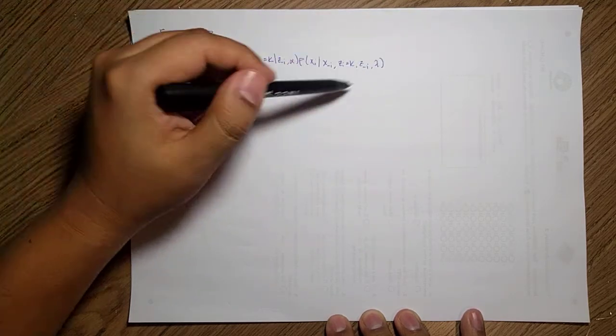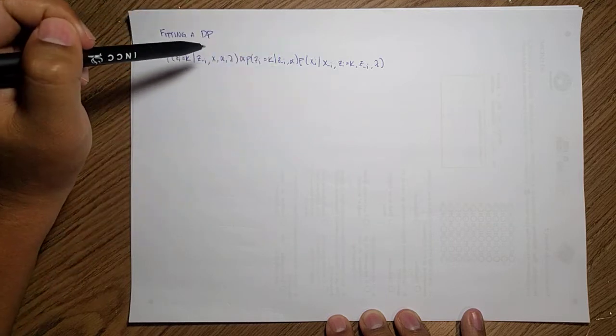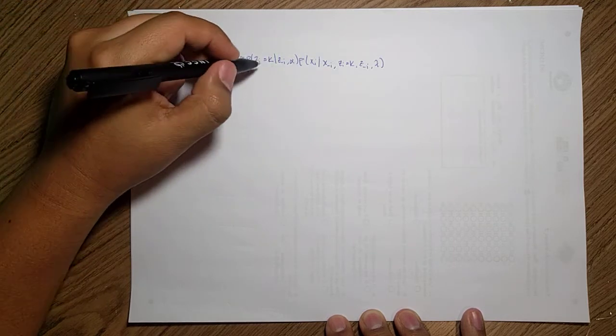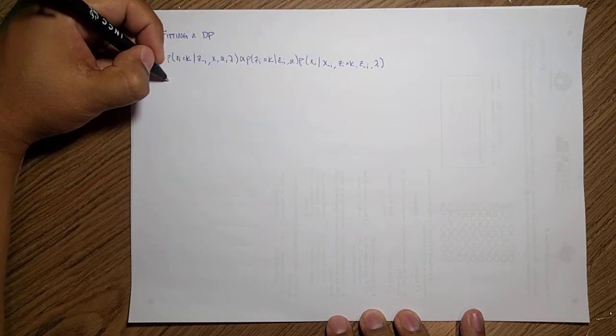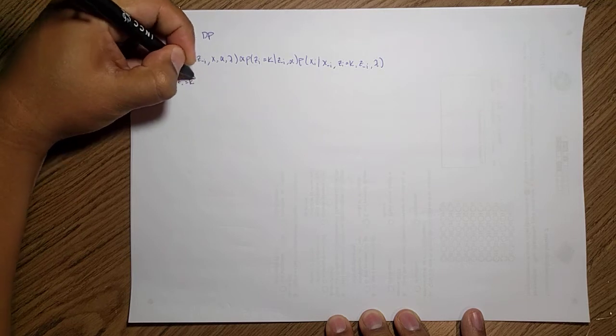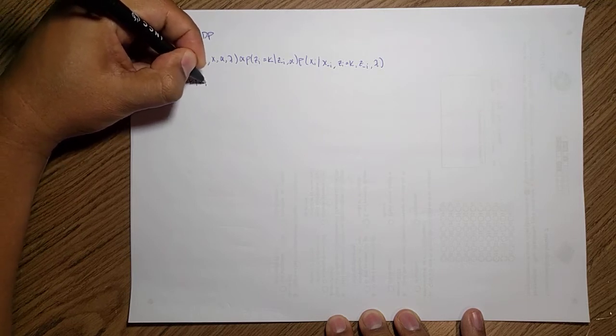And this is the general form. But we're interested in a particular one. So let's go one by one. This first one, the zi equal to k given z not i and alpha.